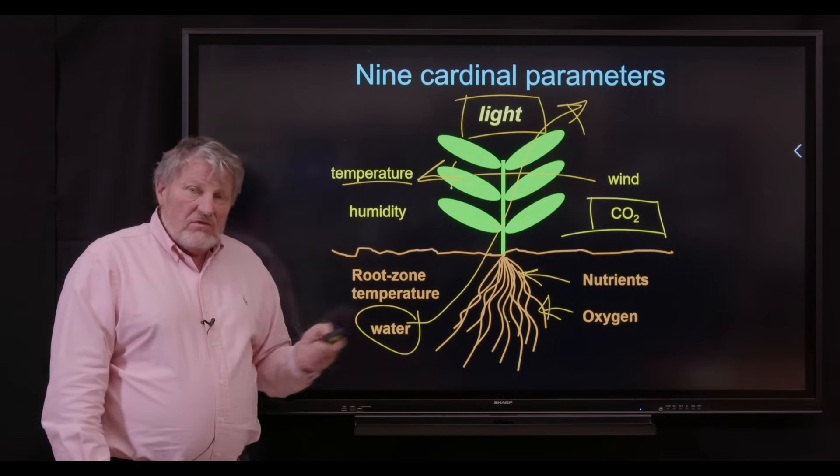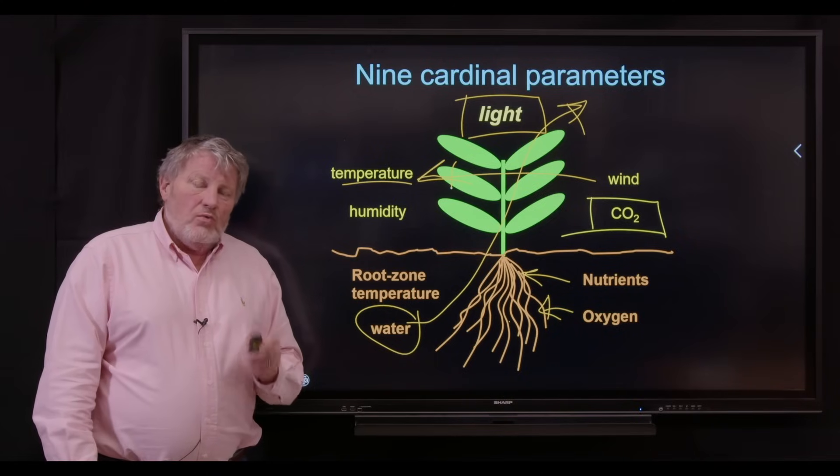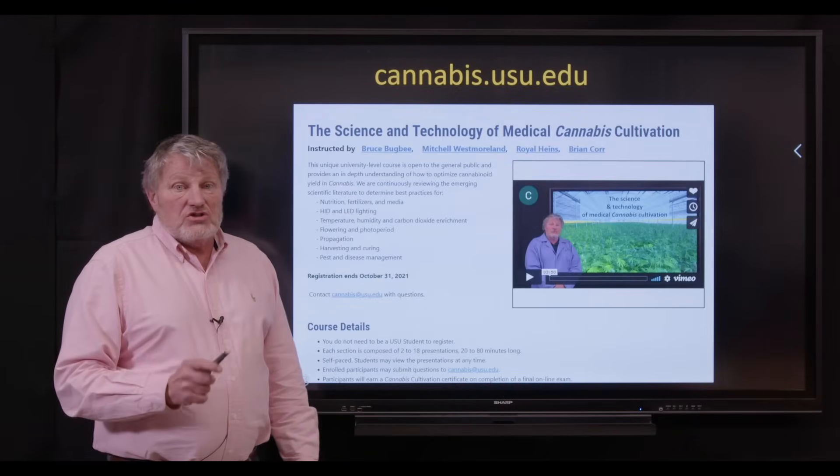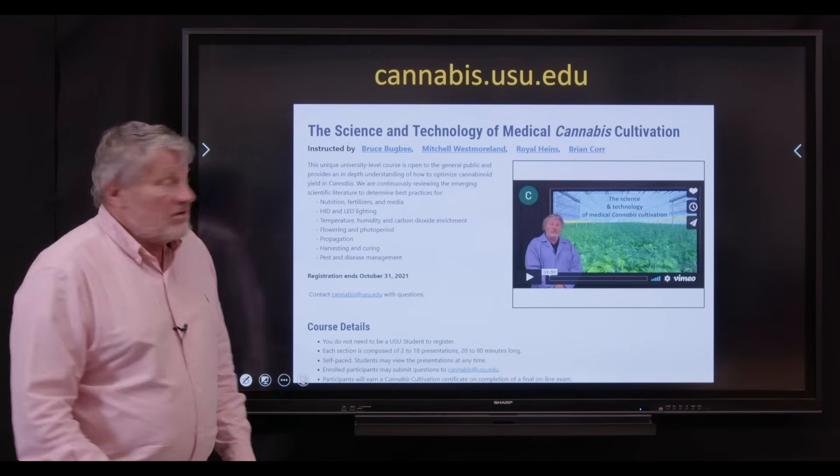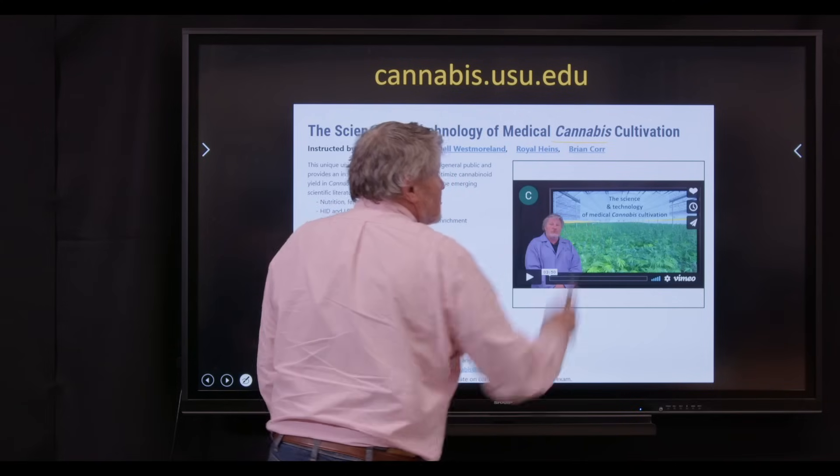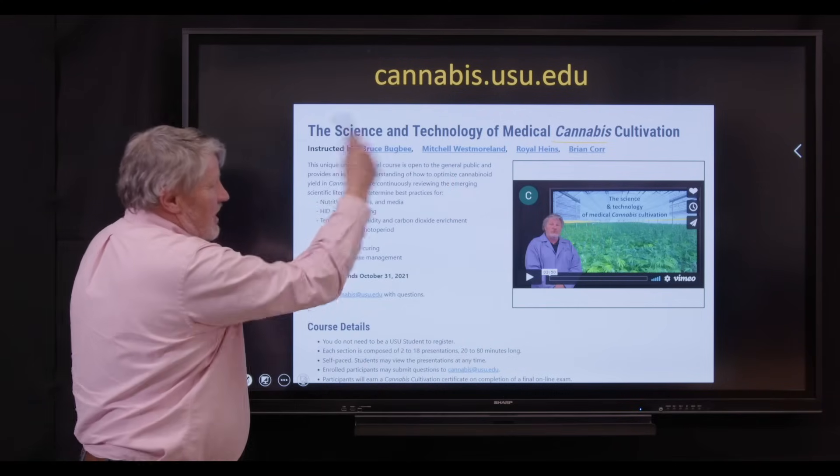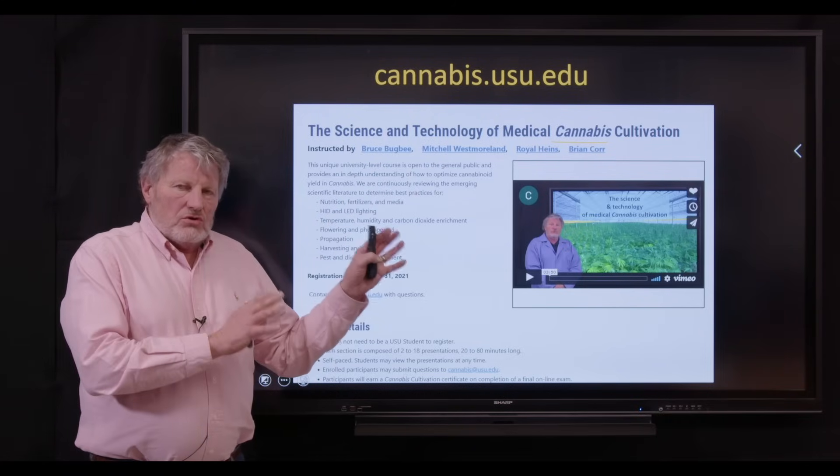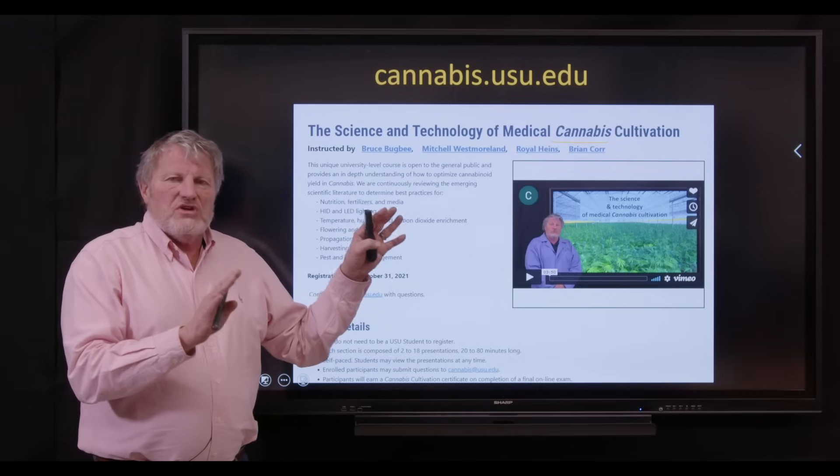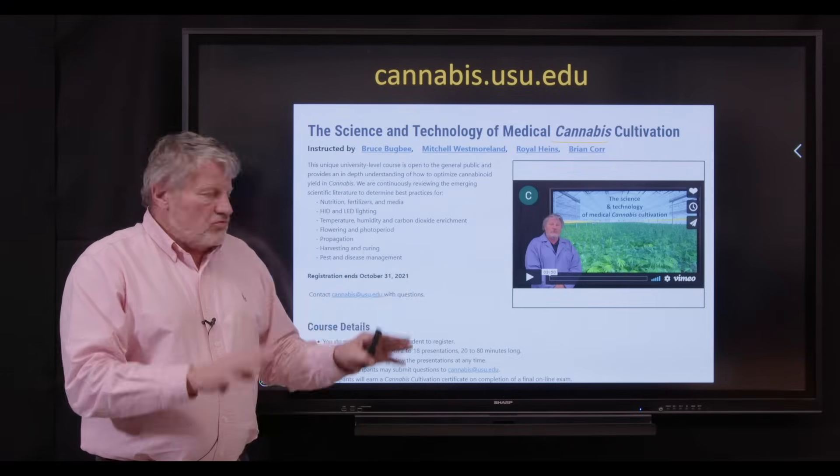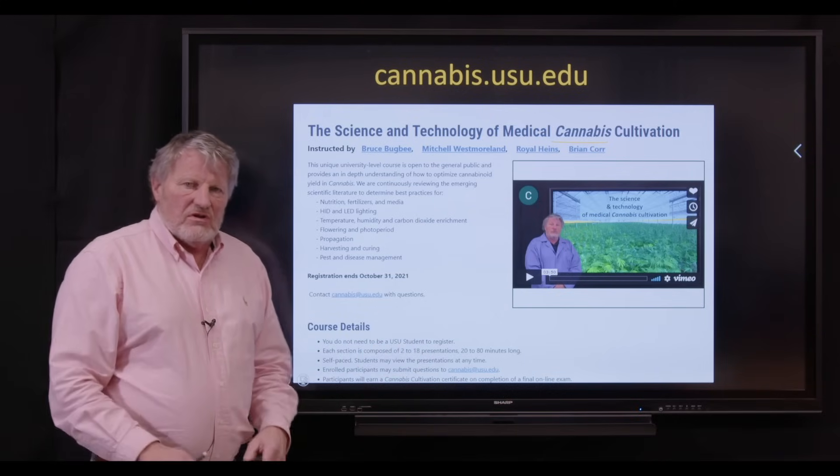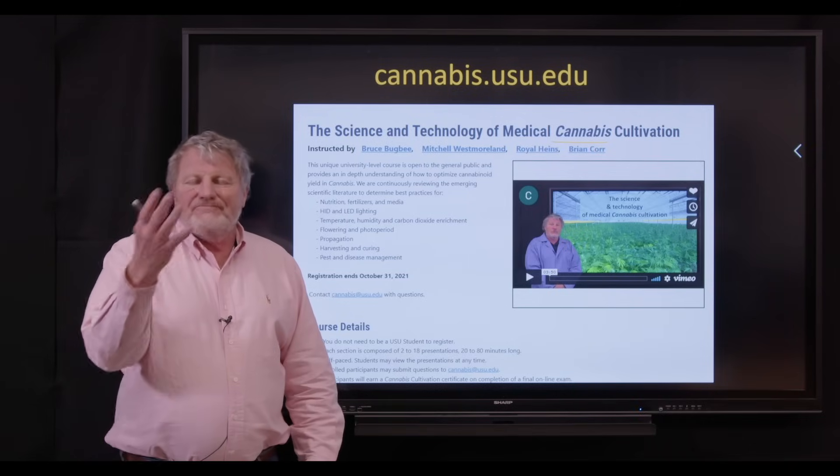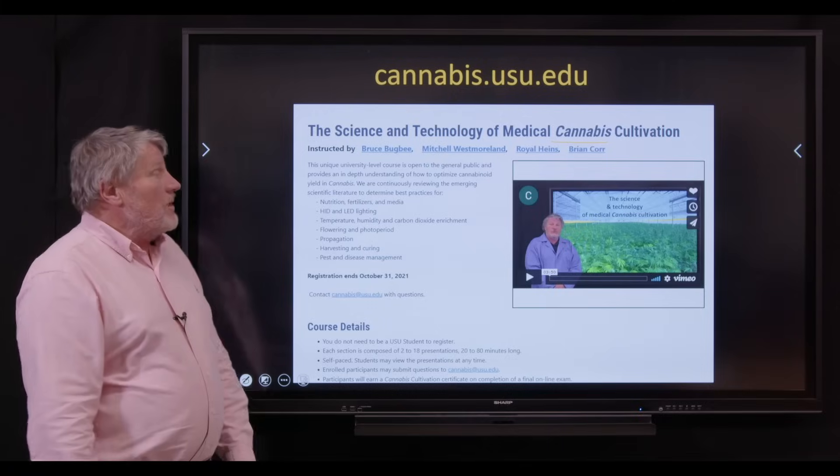Last year we developed and taught an online course in the science and technology of medical cannabis cultivation. Note capital C italicized, that's the name of the genus. This is the page, it's at cannabis.usu.edu. This course got a lot of students, this course is now closed, it's done. But as we speak, we're working on a second edition to this course and it'll be posted here. This website gives you a more in-depth view of some of the things I'm going to talk about here.